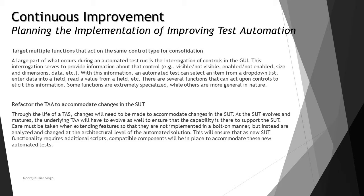The next factor is targeting multiple functions that act on the same control type — a form of consolidation. A large part of what occurs during an automated test run is interrogation of controls in the GUI. This interrogation provides information about that control, such as whether it is visible or not, enabled or not, its size, dimensions, data, etc. With this information, an automated test can select an item from a drop-down list, enter data into a field, or read a value from the field.